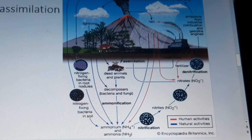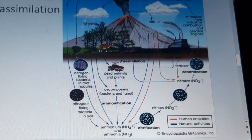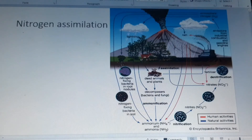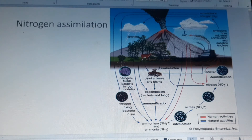The second stage is nitrogen assimilation. Nitrogen assimilation is the formation of organic nitrogen compounds, like amino acids, from inorganic nitrogen compounds present in the environment. Organisms like plants, fungi, and certain bacteria that cannot fix nitrogen gas depend on the ability to assimilate nitrate or ammonia for their needs.